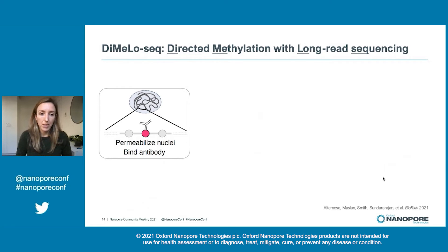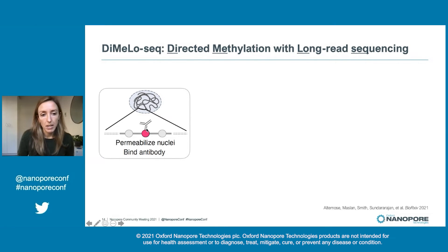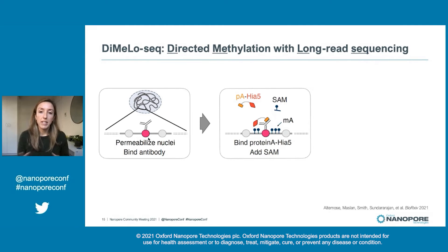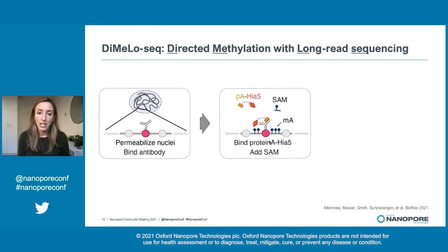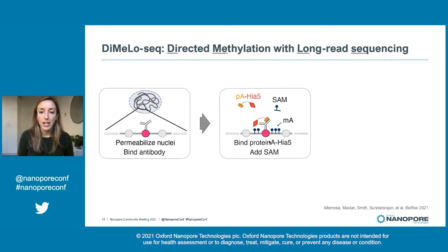To do this, we developed DmeloSeq — directed methylation with long read sequencing. The first step is we permeabilize nuclei and bind an antibody to our protein of interest, so we can target any protein we have an antibody for. Then we methylate in the vicinity of our protein of interest through a protein A-HpaII fusion. Protein A binds IgG antibodies, and we have it tethered to HpaII, which is the methyltransferase that methylates adenines. In this way, we're recruiting this methyltransferase to our protein of interest and methylating adenines in the vicinity. Importantly, methyl adenines are not endogenously methylated in eukaryotic genomes, so we're leaving a bio-orthogonal mark of where our protein is bound.